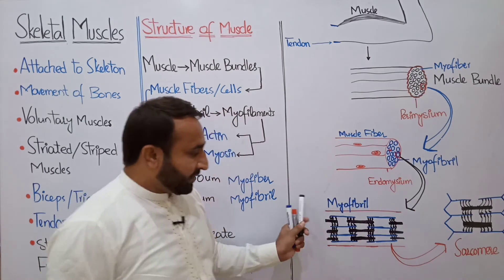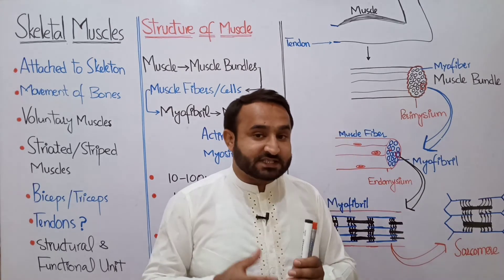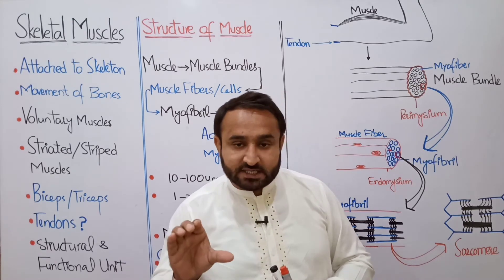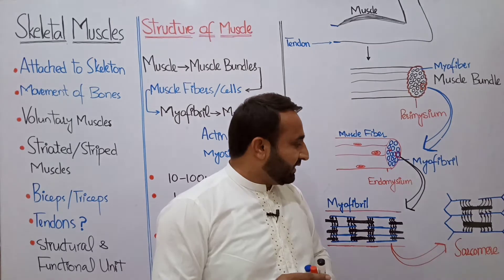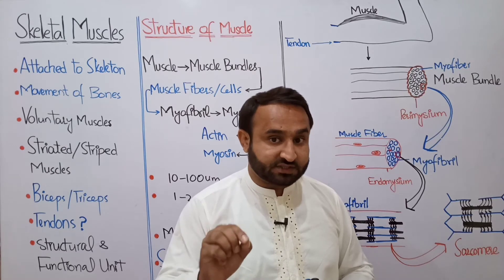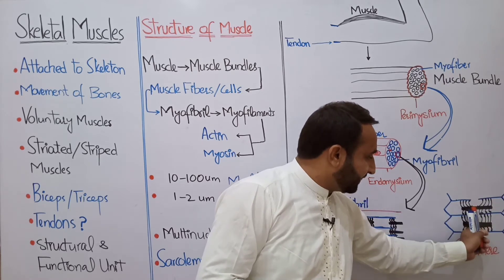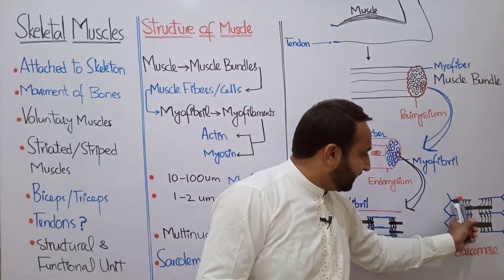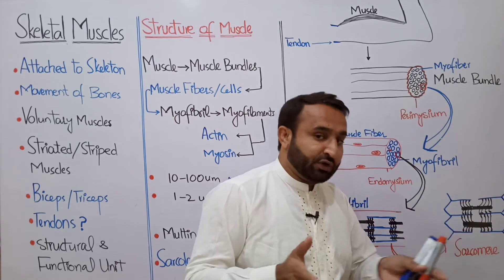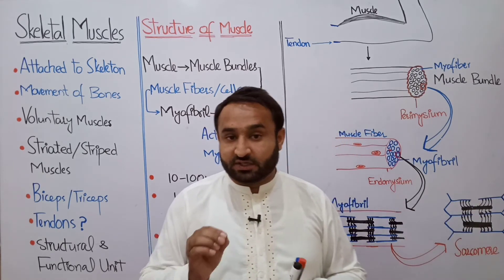Inside the myofibril there is the sarcomere, which is a contractile unit. The distance between two consecutive Z lines is called the sarcomere. These are new terminologies. Looking at the ultrastructure of the myofibril: the Z line is visible, the thick myosin filament and the thin actin filament are shown, and the cross bridges attach myosin to actin during muscle contraction. The sarcomere is the basic contractile unit.